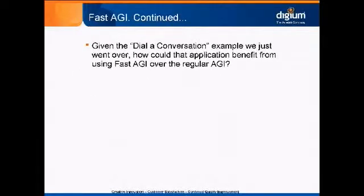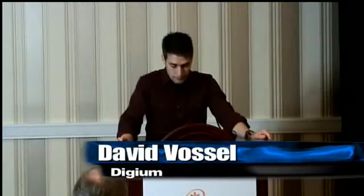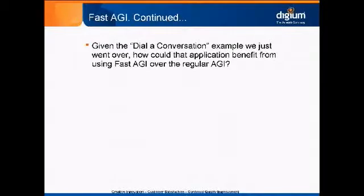Given the Dial-a-Conversation example, how could it benefit from Fast AGI over regular AGI? Part of the problem is that every time it executed, it would have to read an entire file into memory. With Fast AGI, you could have that file read once in memory, have a TCP server running, and every time a new connection starts, access that file in memory rather than re-reading it. Also, having it on another box offloads CPU usage. In my example, I create a WAV file for every conversation idea and then delete it, but if you have one persistent process, you can keep those WAV files around and reuse them.